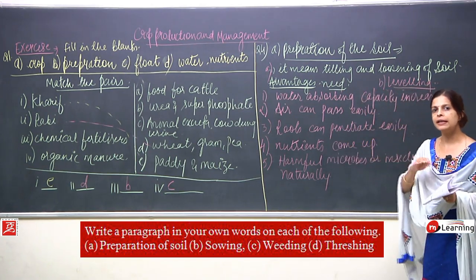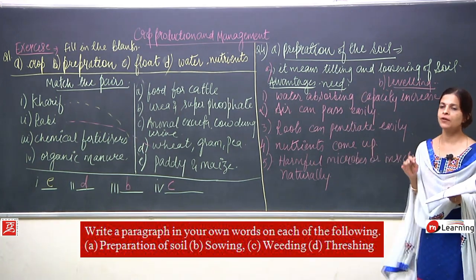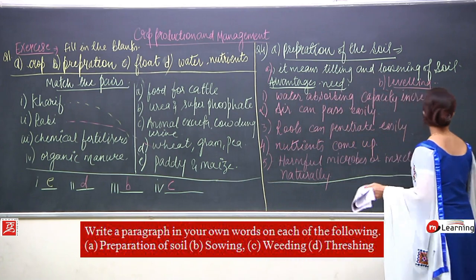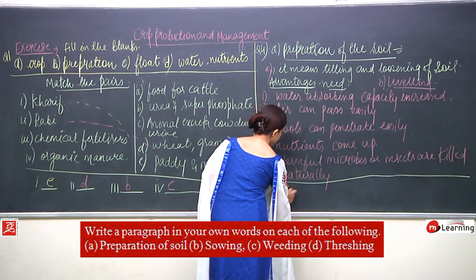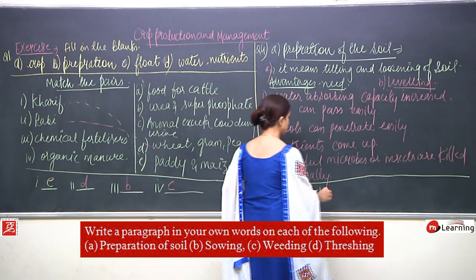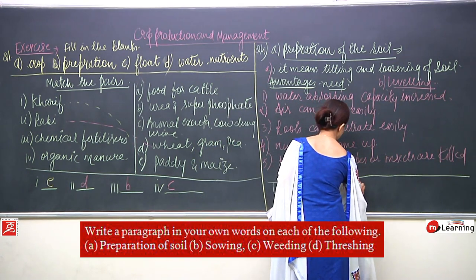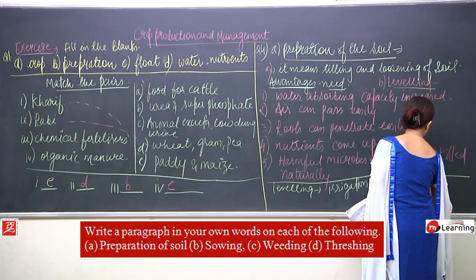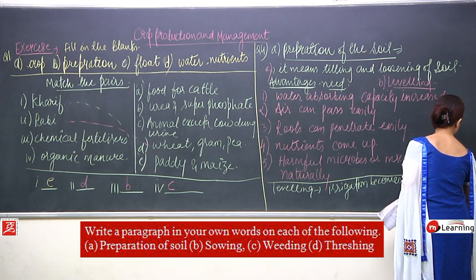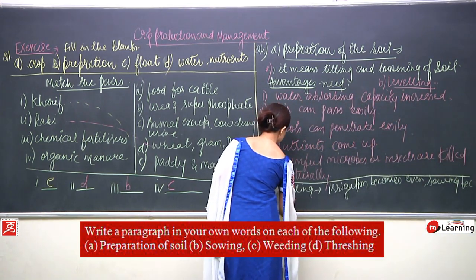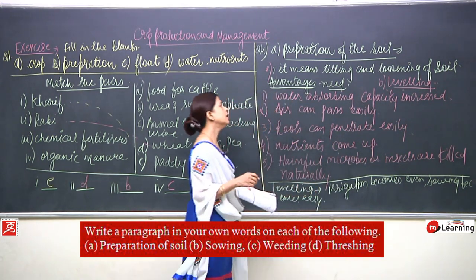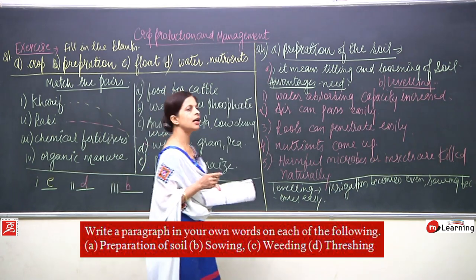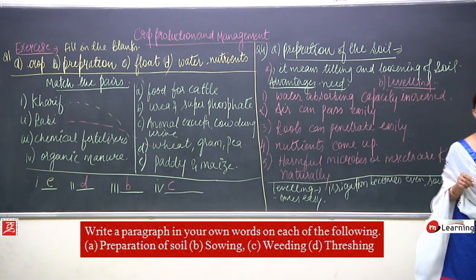The second step after tilling is levelling. Levelling is done so that an equal amount of water can reach everywhere during irrigation. It also makes sowing easier. The instruments used for preparation of soil are the plough, used for tilling, and the leveller, used for levelling.